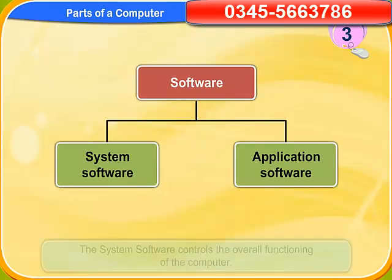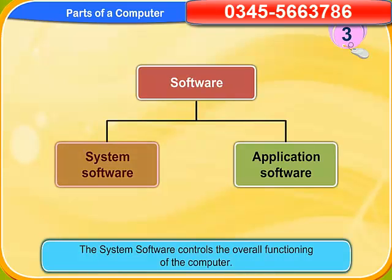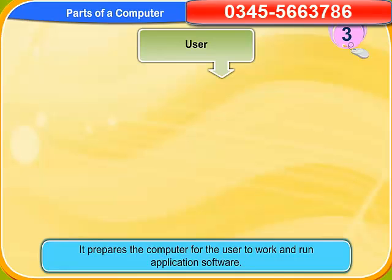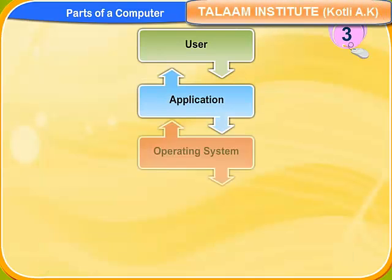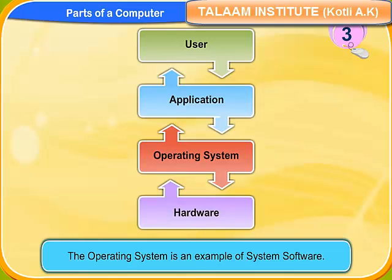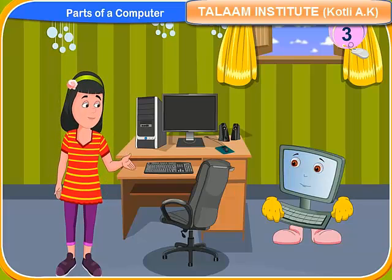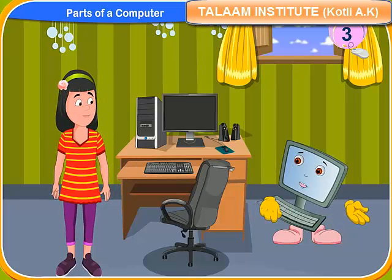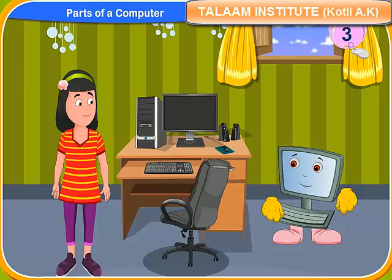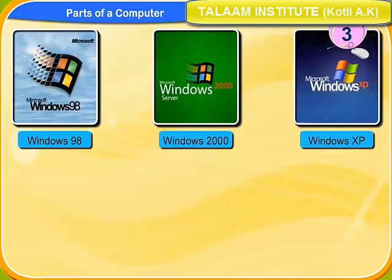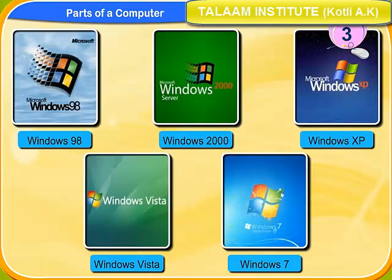Let me know more about them. The system software controls the overall functioning of the computer. It prepares the computer for the user to work and run application software. The operating system is an example of system software. Isn't Microsoft Windows an operating software? Yes Rennie, it is the most popular operating system available today. Currently different versions of Microsoft Windows are available: Windows 98, Windows 2000, Windows XP, Windows Vista, and Windows 7.